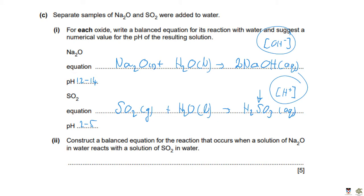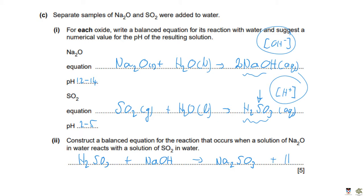Construct a balanced equation for the reaction when sodium oxide dissolved in water reacts with SO₂ solution. Adding Na₂O to water gives NaOH, and SO₂ in water gives H₂SO₃. So we react H₂SO₃ with NaOH. When a metal hydroxide reacts with a dilute acid, we form a salt plus water. The salt here is sodium sulfite Na₂SO₃ — sodium replaces hydrogen, and since Na is +1 and SO₃ is 2−, the formula is Na₂SO₃.